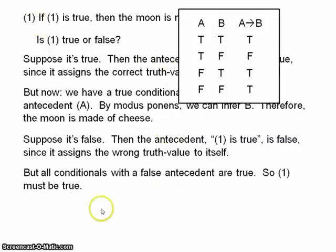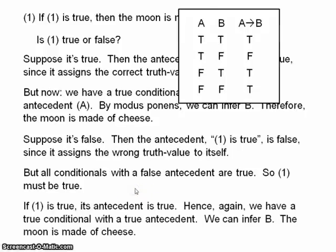But now we have the same problem as before. Our conditional is true. But if 1 is true, the antecedent is true, because it describes itself accurately. Hence, again, we have a true conditional with a true antecedent, so we can infer the consequence. The moon is made of cheese. So it seems that whether we assign this conditional true or whether we assign it false, we're forced to conclude that the moon is made of cheese. We have here a serious paradox.